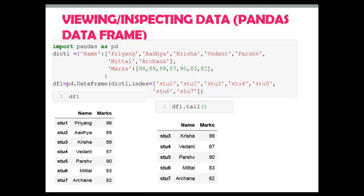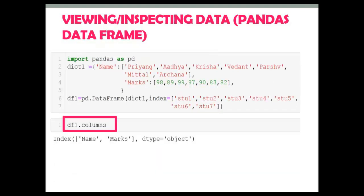Next, the tail function. The tail function is used to get the last n rows. By default it will display the last 5 rows of the DataFrame.